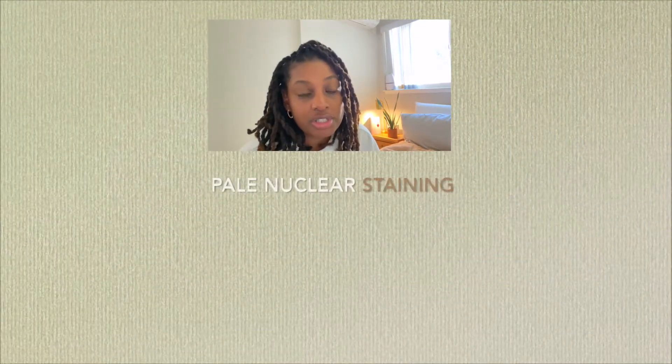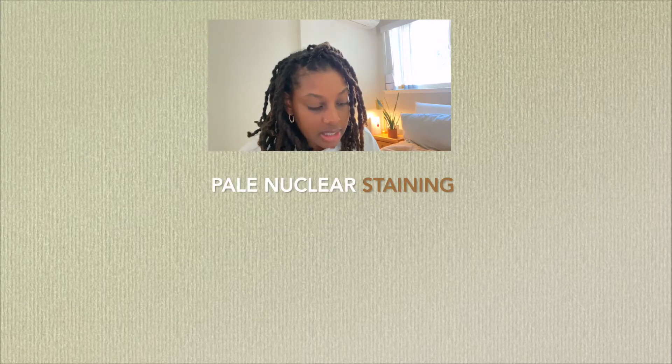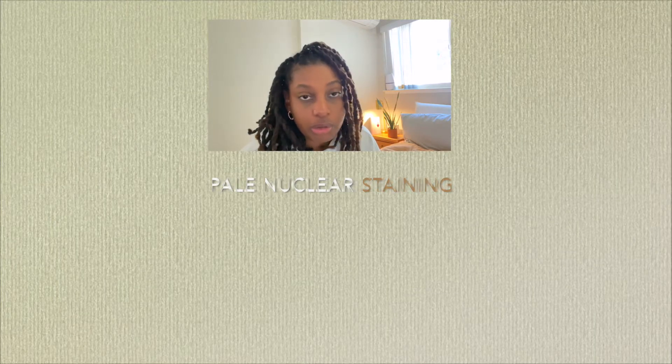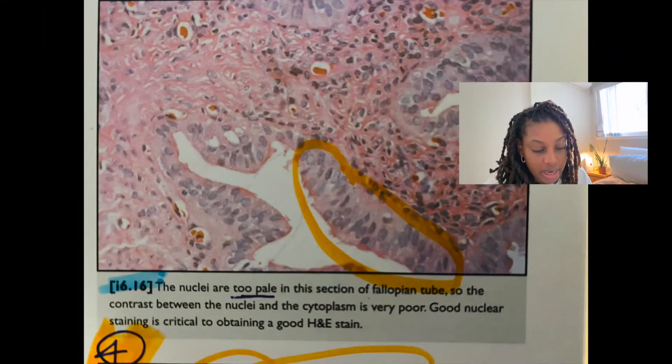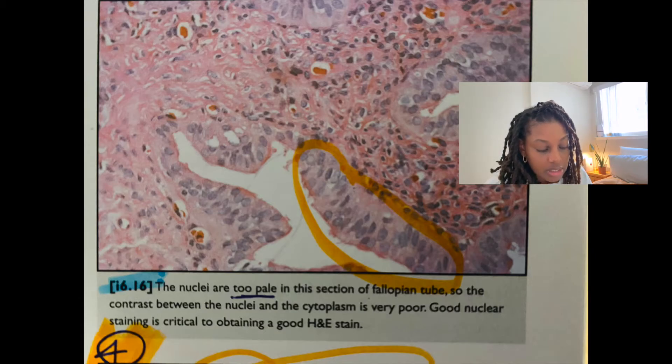Another really important H&E troubleshooting topic is pale nuclear staining — hematoxylin that is too light. The nuclei are too pale in the section, and the contrast between the nuclei and the cytoplasm is very poor. Good nuclear staining is critical to attaining a good H&E. Some causes include not leaving the slice in hematoxylin long enough, staining with over-oxidized or depleted hematoxylin, or over-differentiating the hematoxylin.